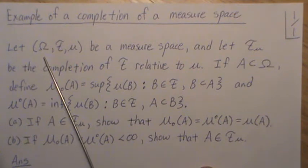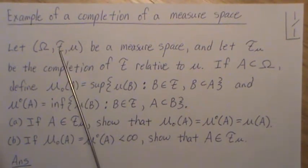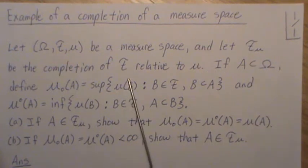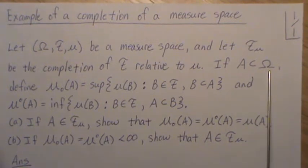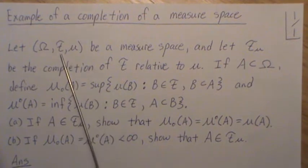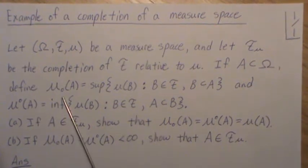So let's let omega, f, and mu be a measure space. That means f is a sigma field. And let f of u be the completion of f relative to mu. Now if A is any subset of omega, it doesn't have to be a set of the sigma field. It could be any set.